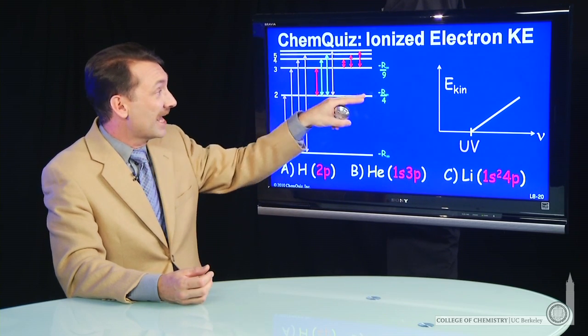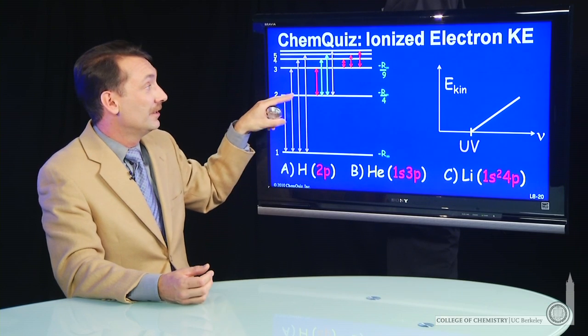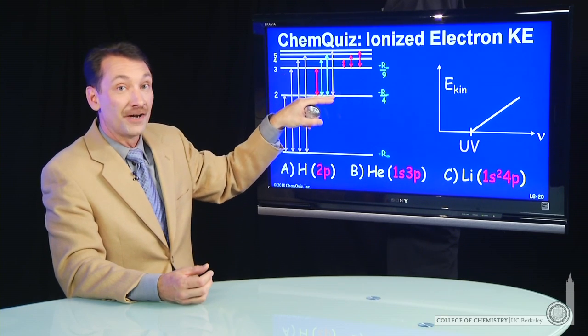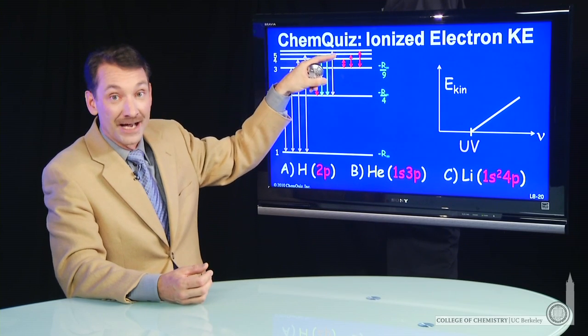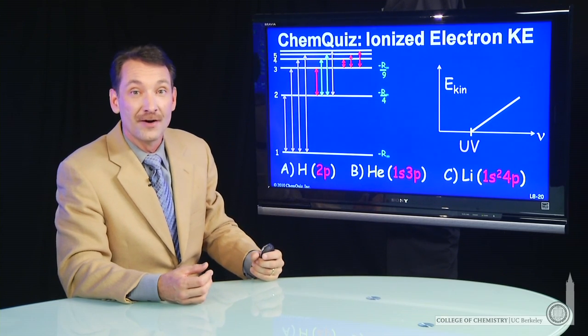I said anything that ended in n=2 would have ionization energies in the ultraviolet. You can have some transitions in the visible, but if you're going to ionize, that's going to be in the ultraviolet.